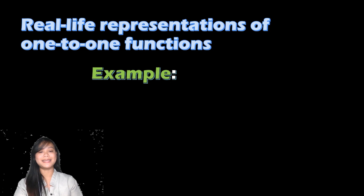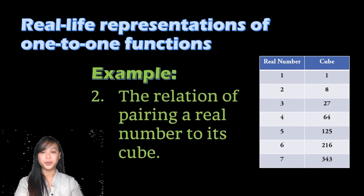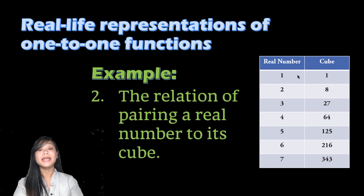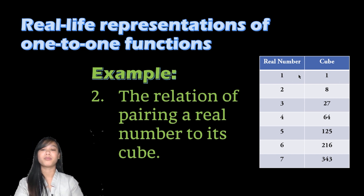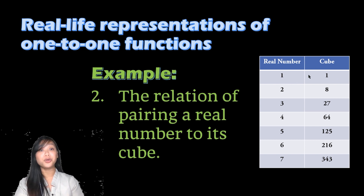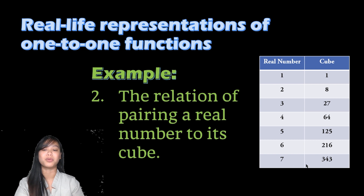Another example is the relation of pairing a real number to its cube. In the table, every real number has its own unique cube: one cubed is one, two cubed is eight, three cubed is 27, four cubed is 64, five cubed is 125, six cubed is 216, and seven cubed is 343.